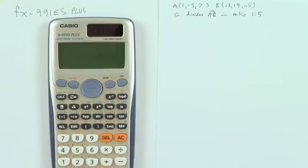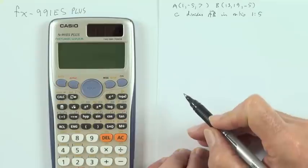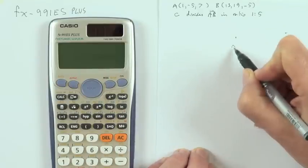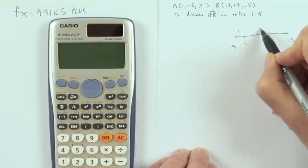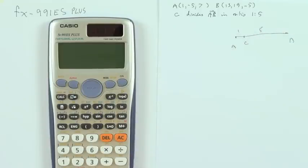As an example of using the vector menu, whether it saves an awful lot of time is maybe debatable, but taking this as an example: there's two points A and B, and C divides it in the ratio of 1 to 5, so C's about here, cutting it in the ratio 1 to 5. How could you do that using the vector menu?